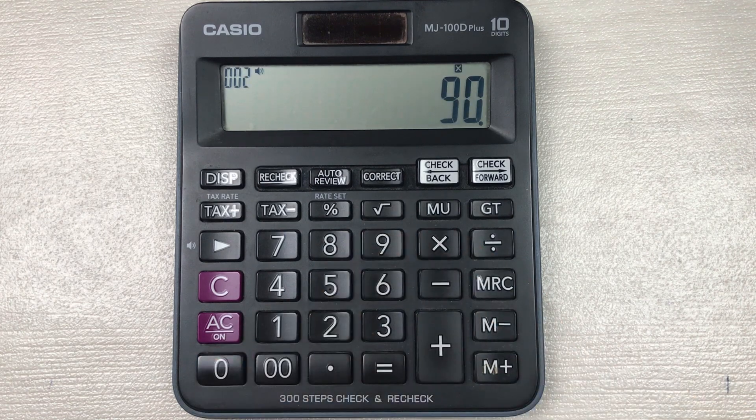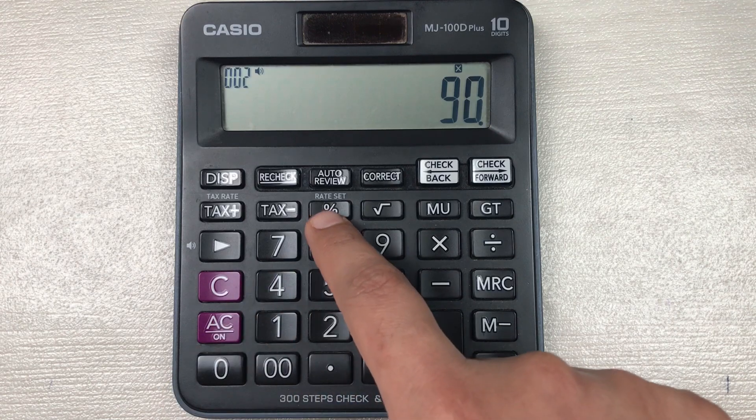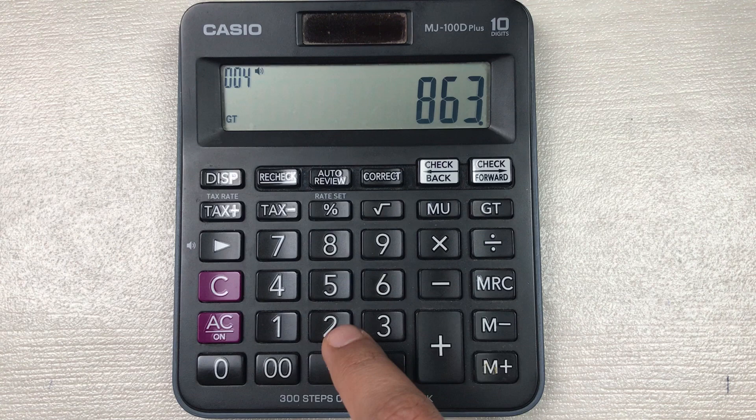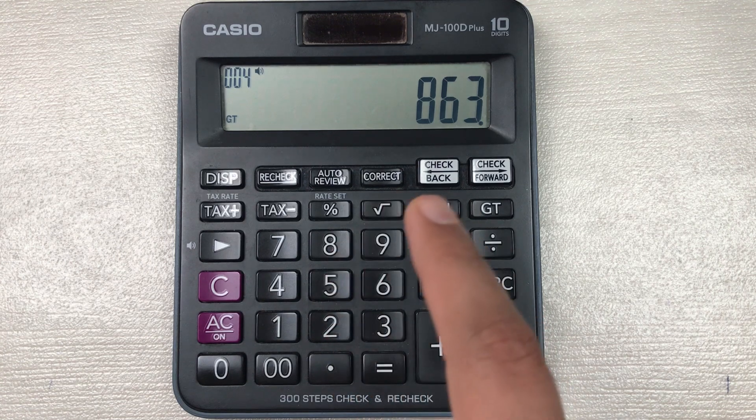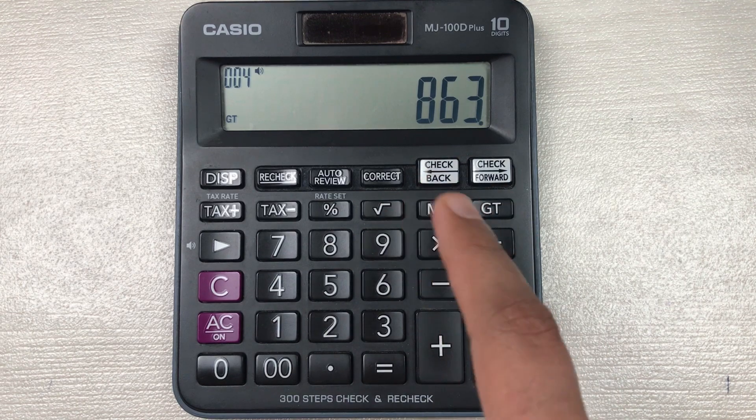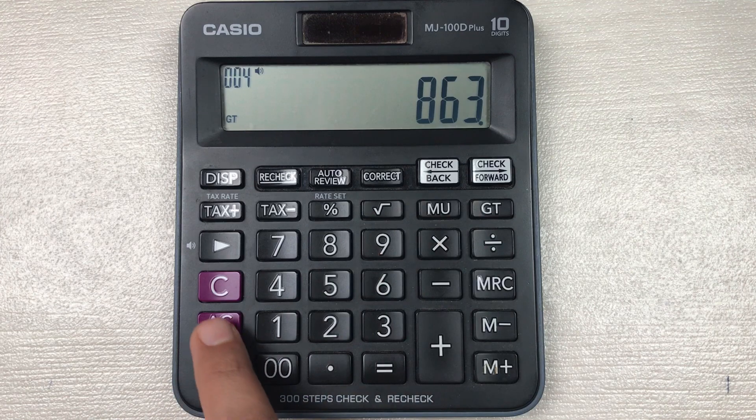You multiply it with 90, then you press this percentage button, and then in the last you press this minus button. So here is the final answer: 863 is the final price after 90% off.